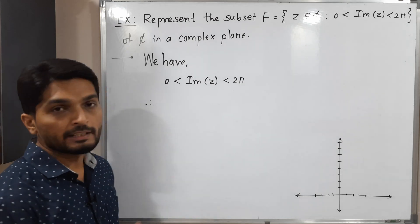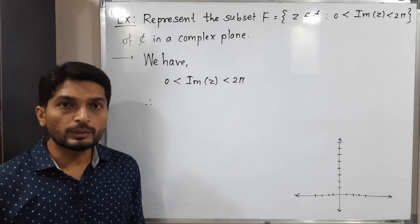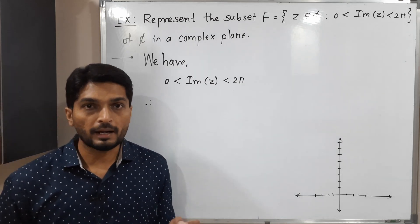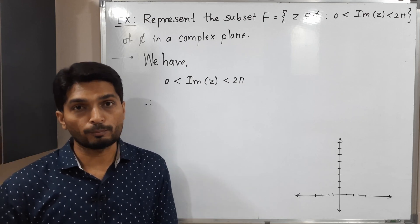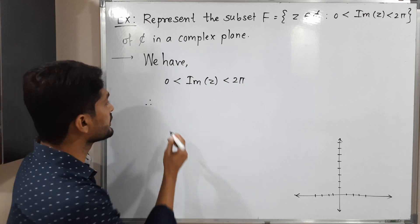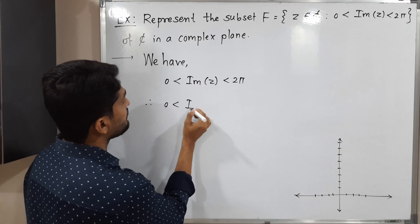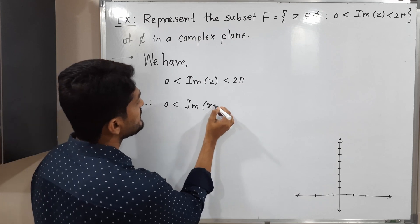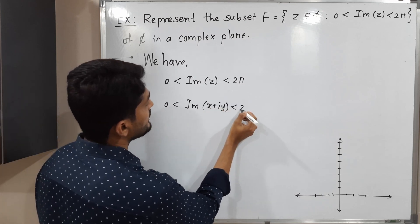What we do in this case is replace z by its Cartesian form, which is x plus iy. So let me write here: 0 less than imaginary part of z, which means x plus iy, less than 2π.